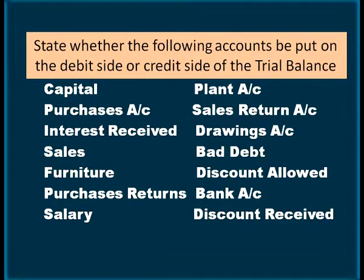Another question: State whether the following accounts be put on the debit side or credit side of a trial balance — capital, purchases, interest received, sales, furniture, purchase returns, salary, plant, sales returns, drawings, bad debt, discount allowed, bank account, and discount received.